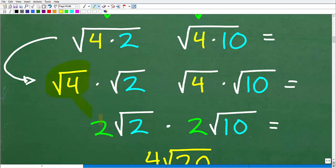Square root of 4 is 2, so 2 times the square root of 2 is obviously 2 square root of 2. But we're multiplying this by the square root of 40, which is the same thing as square root of 4 times 10.